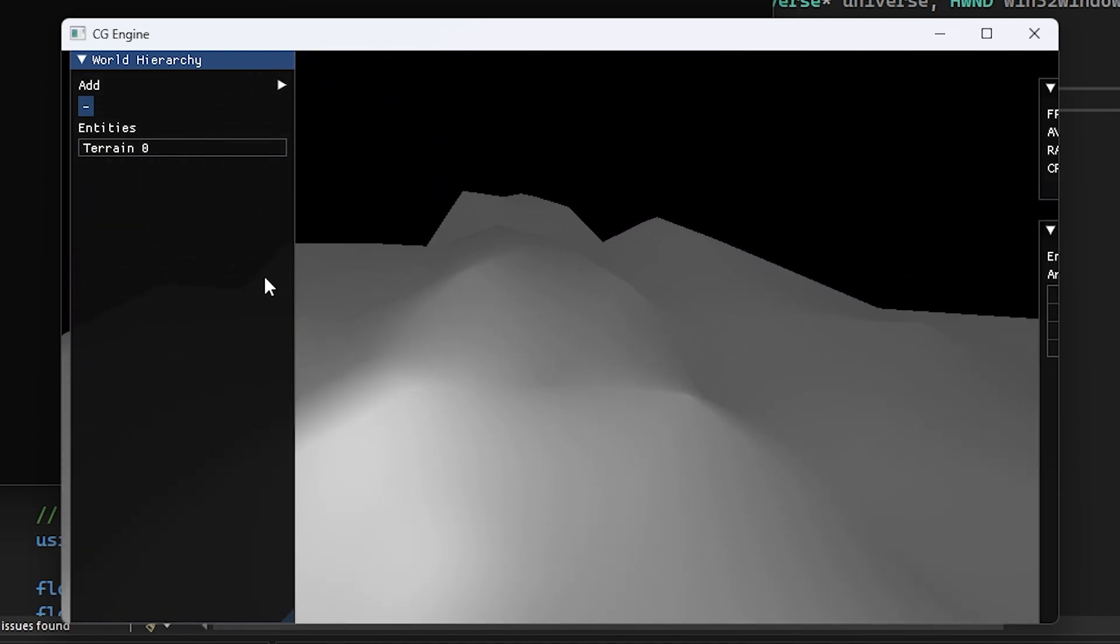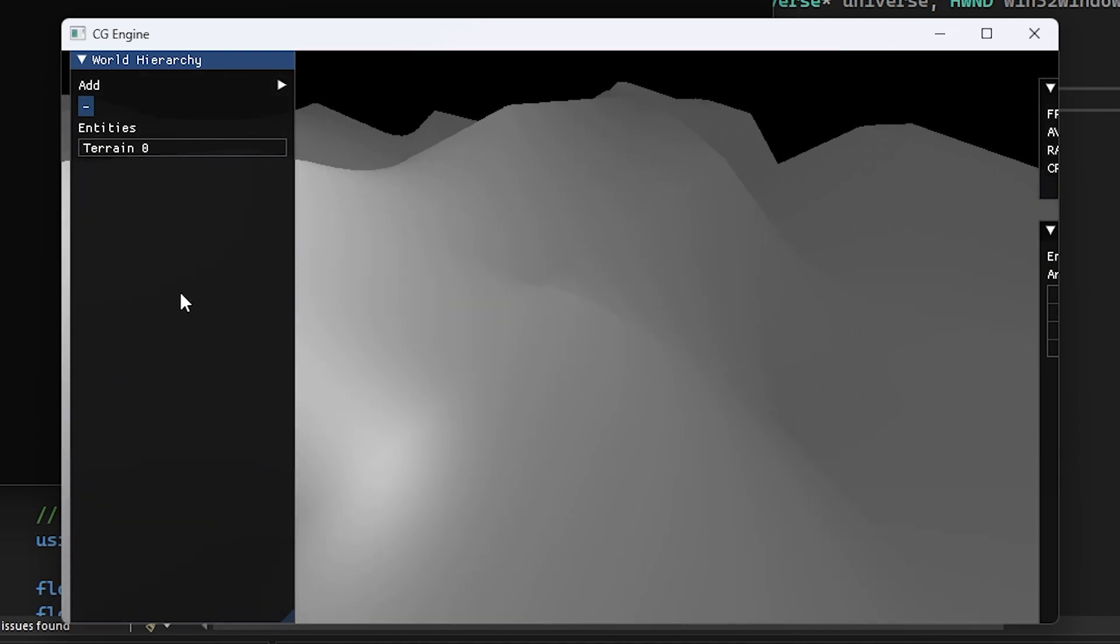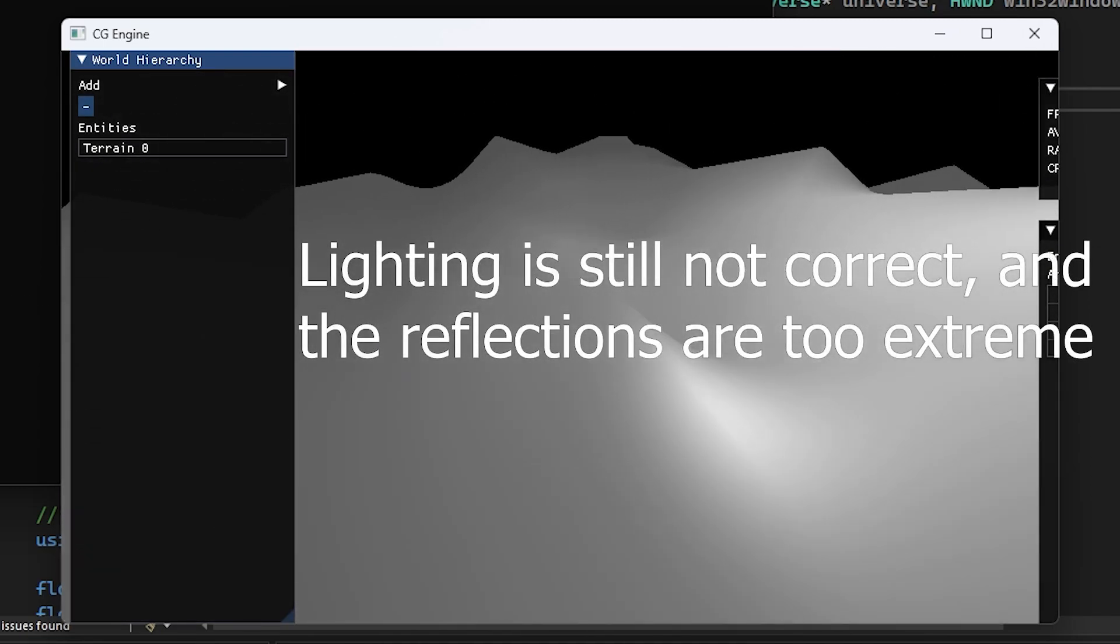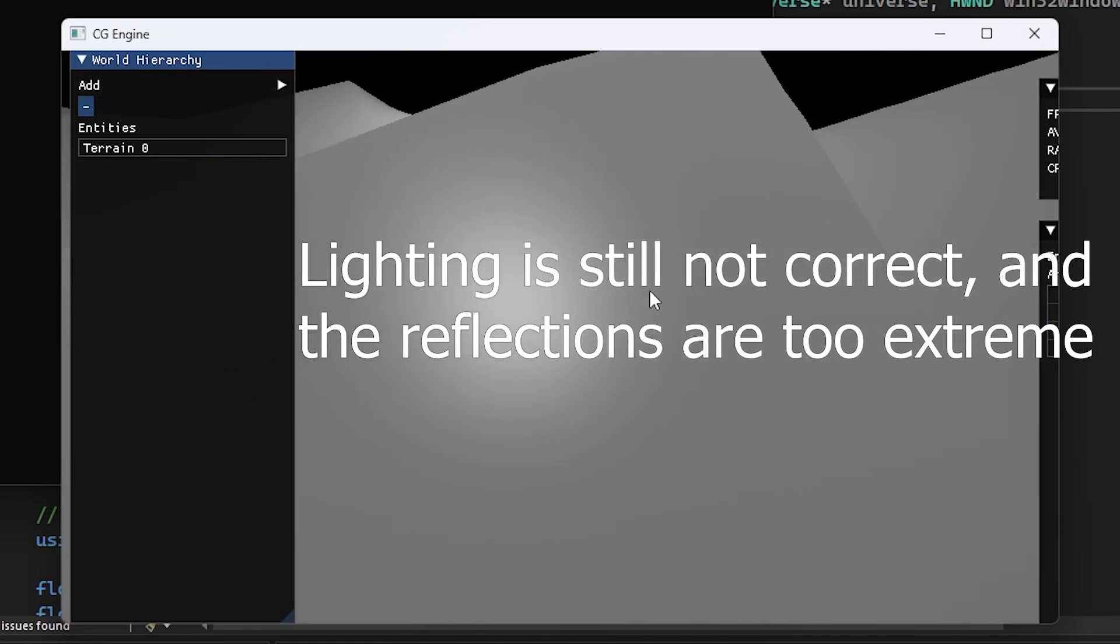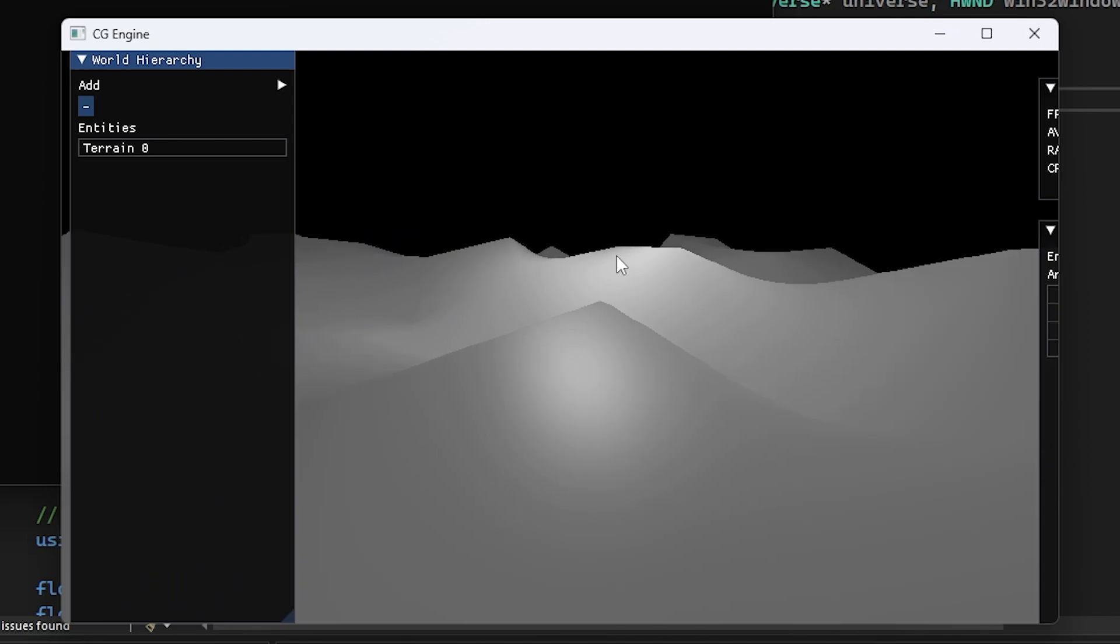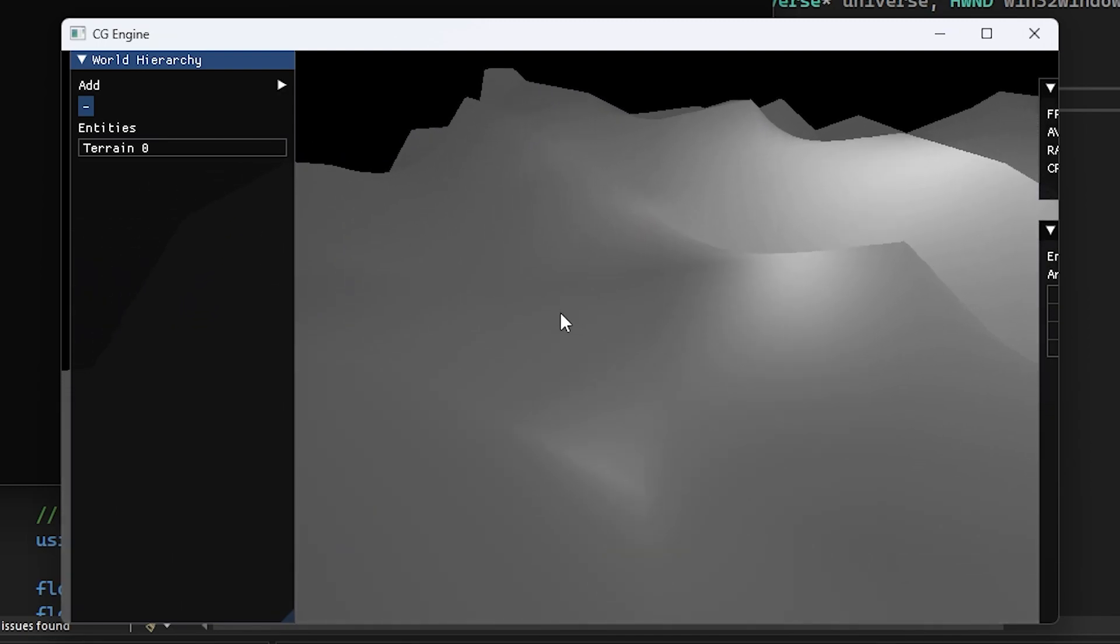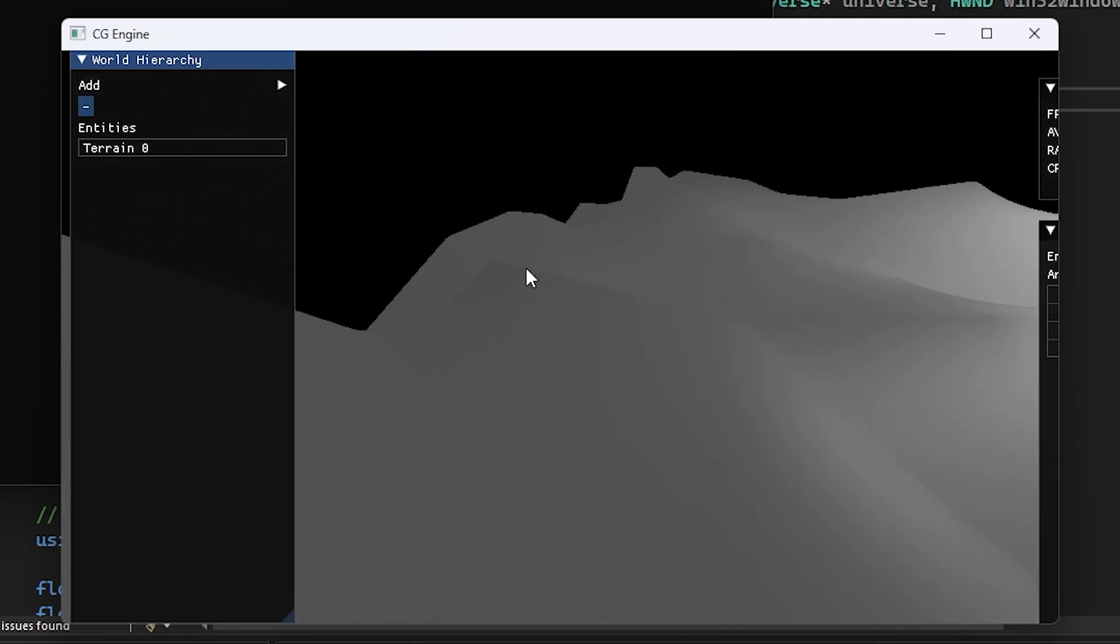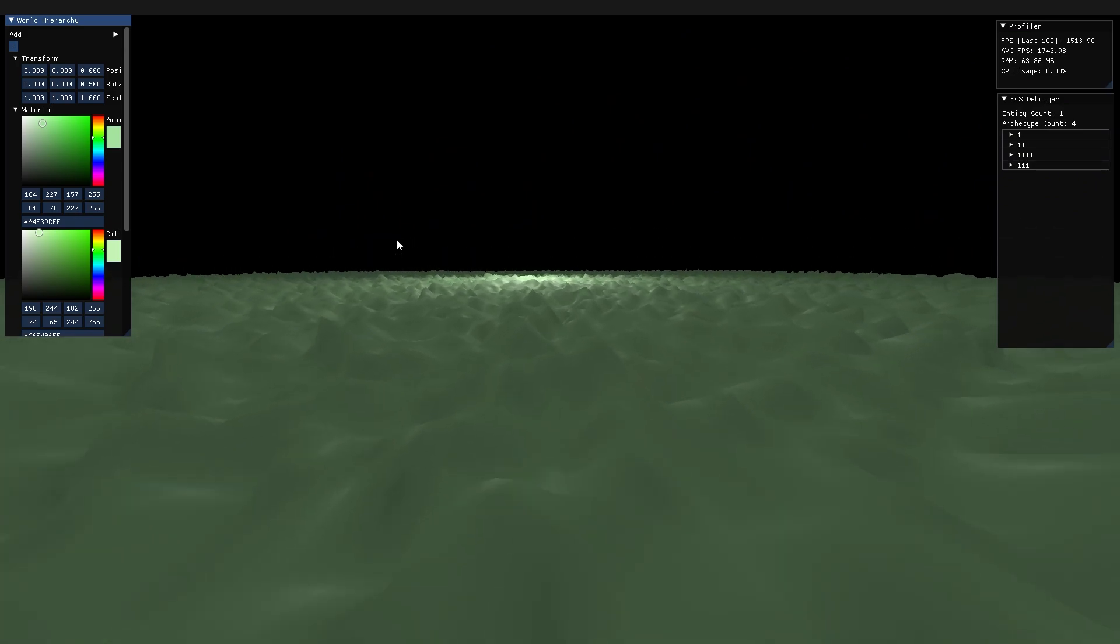Next, I would like to apply actual textures to the terrain, maybe based on height and steepness. And we could possibly try implementing some tools that would allow us to shape the terrain ourselves instead of using a noise matrix. We would likely need some sort of an input system for that, but all that next time.